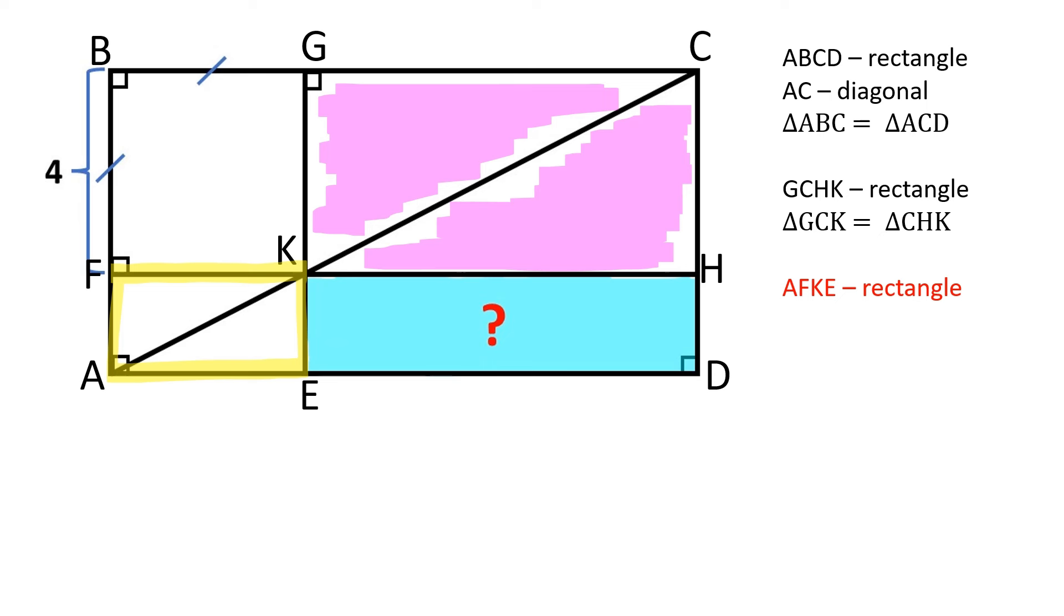AFKE is a rectangle. AK is its diagonal. Triangles AFK and AKE are congruent. Let's mark them green.